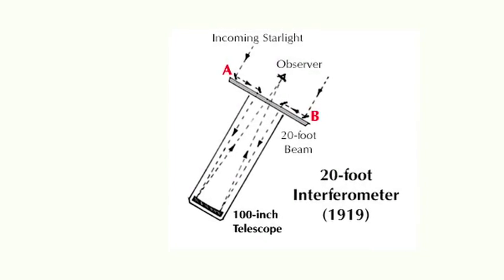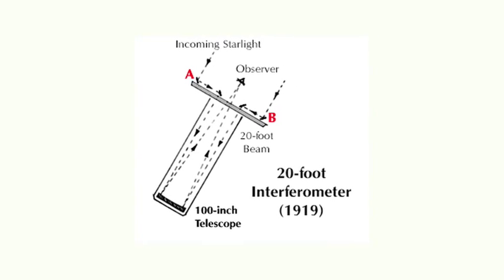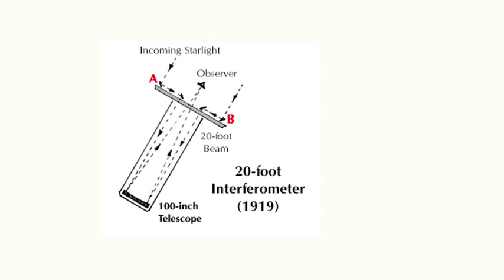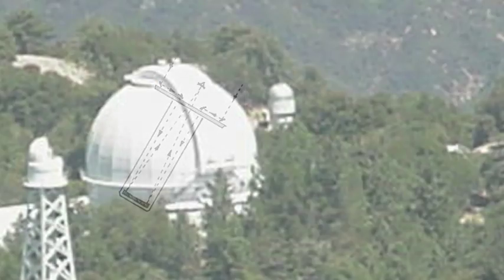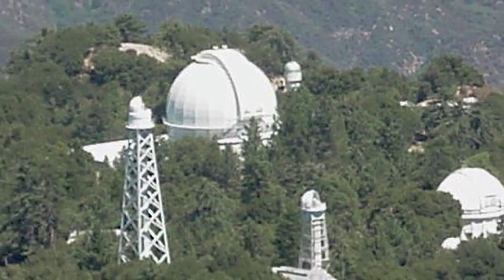Michelson's design in 1919 to measure the diameter of stars utilized a 20-foot baseline interferometer attached in front of the 100-inch telescope at Mount Wilson.